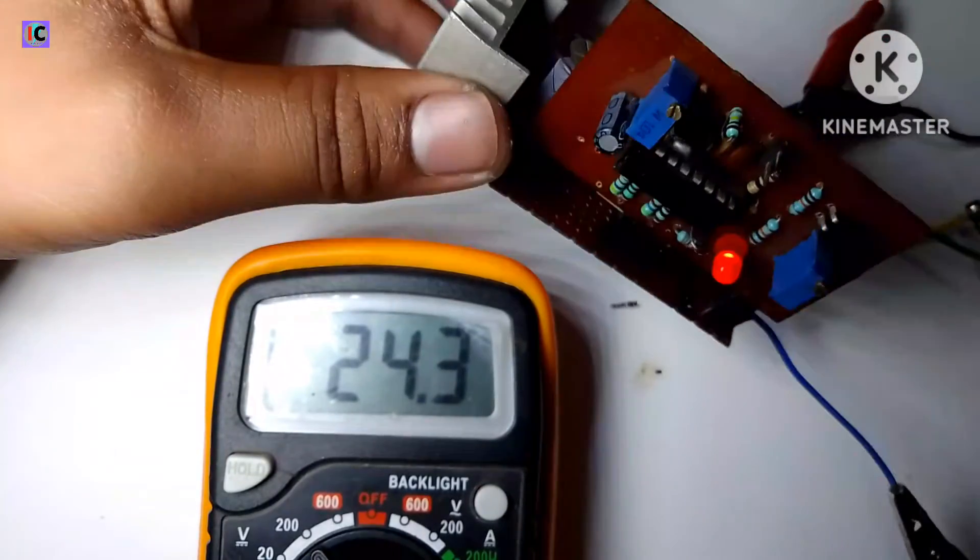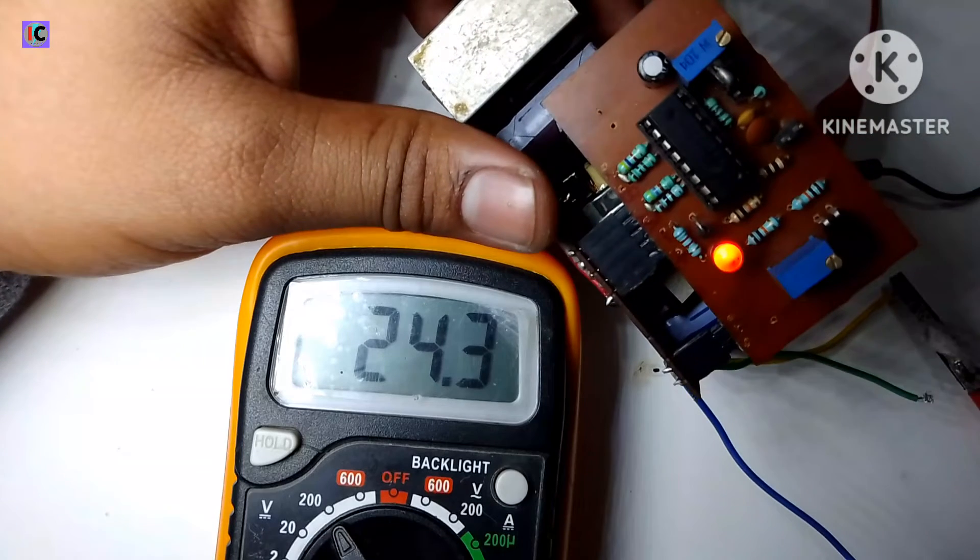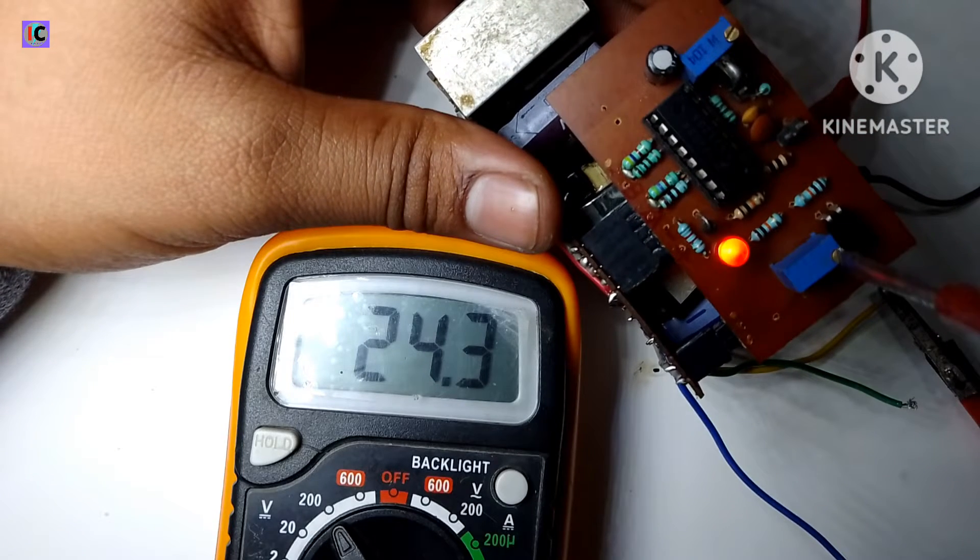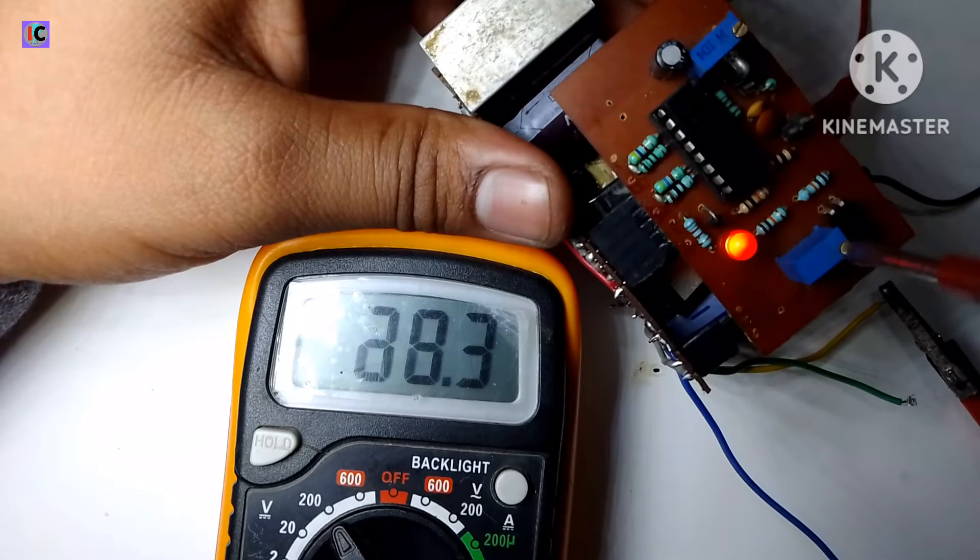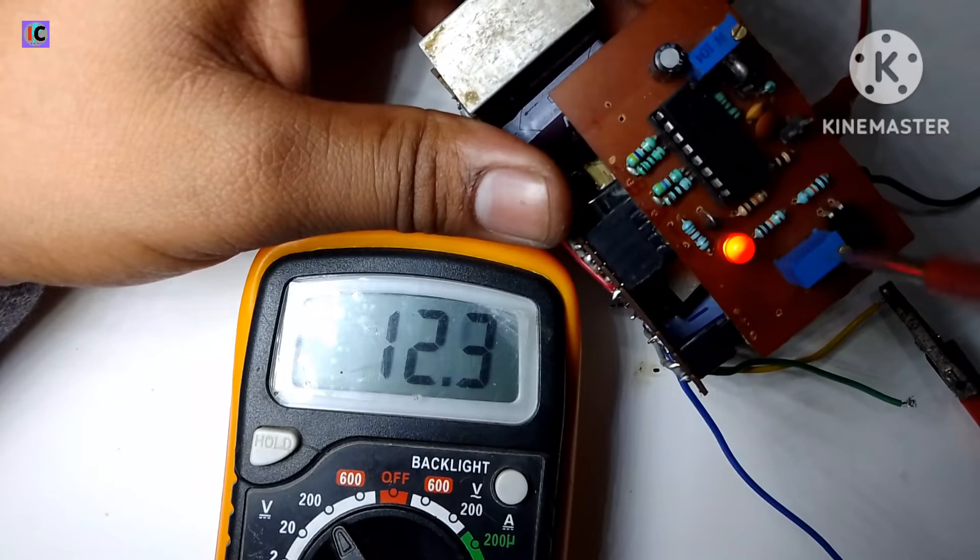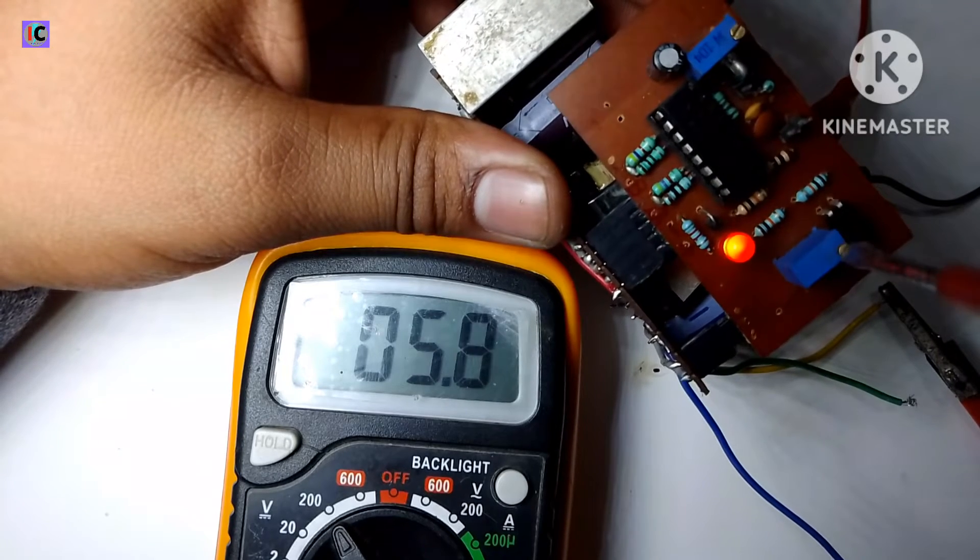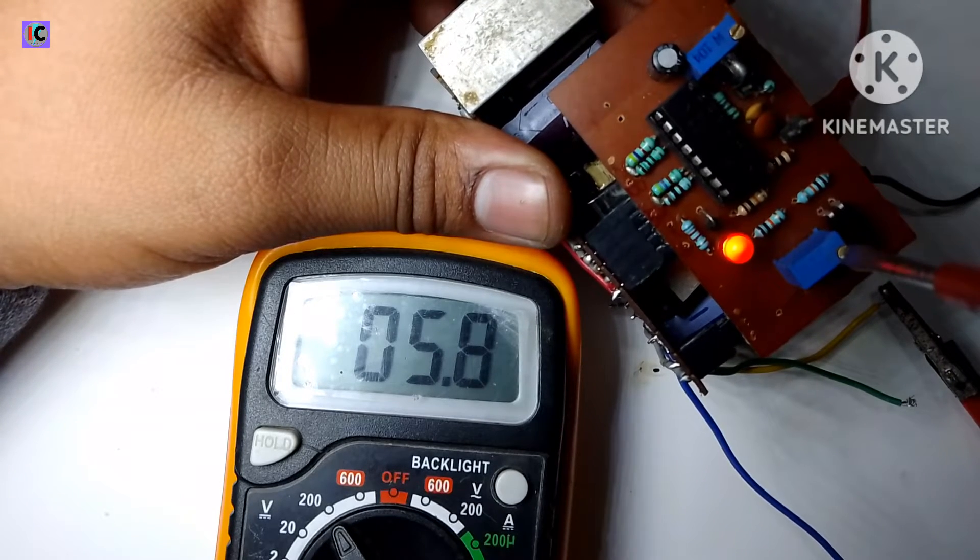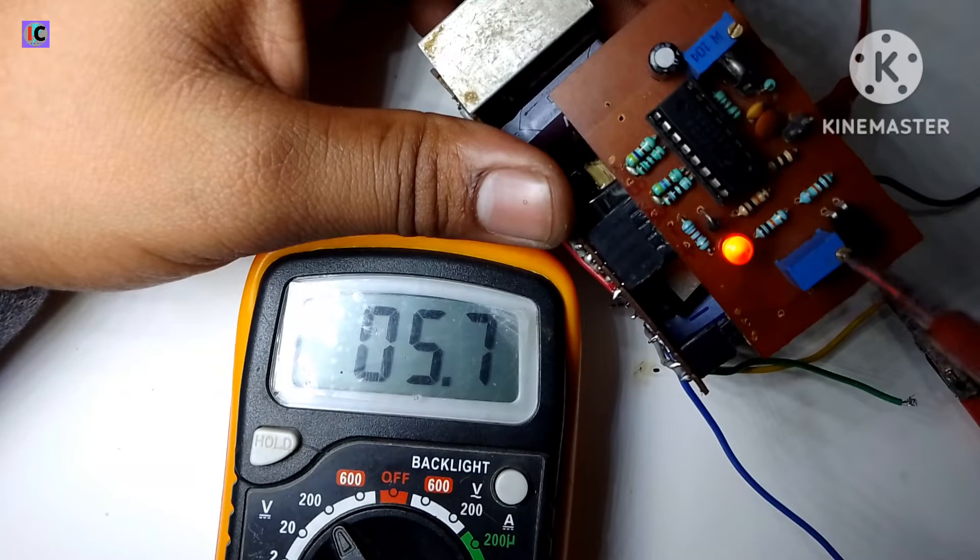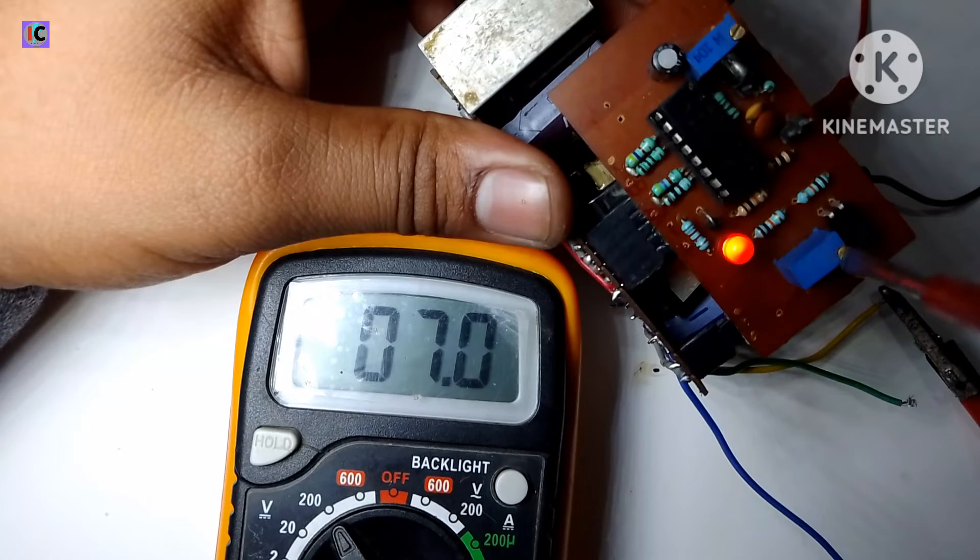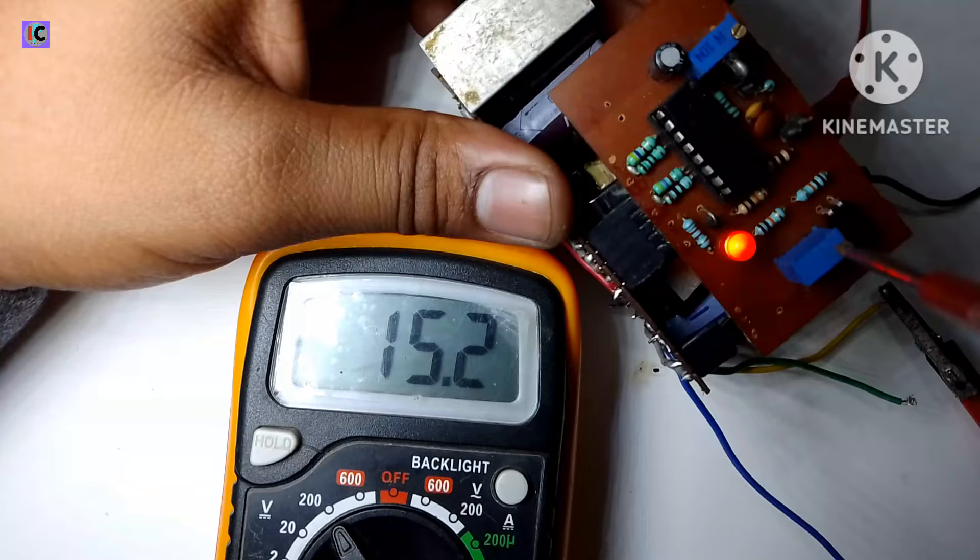We can also adjust the output voltage in the buck mode and the boost mode. We are decreasing the output voltage from 24 to below the voltage. The minimum voltage here we have is almost 6 volts. That means we can convert 12 volt to 6 volts, so this can also be used as a buck converter.